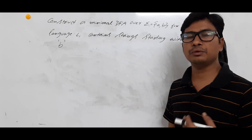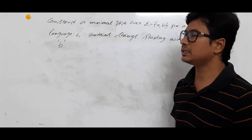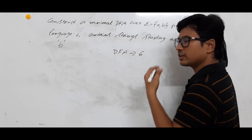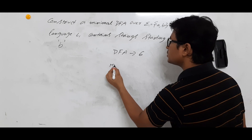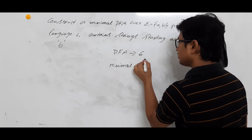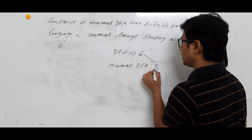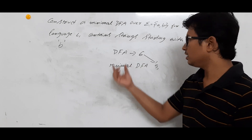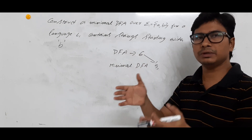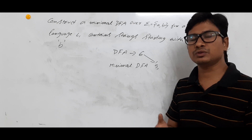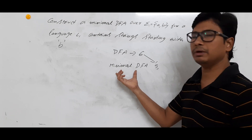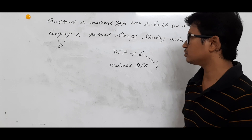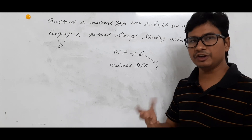So till now the three examples we discussed were all DFAs. Minimal DFA means you have a DFA with some number of states, and you reduce that number. If it originally has six states and you reduce it to five or four, then you have a reduced DFA. The advantage is memory: fewer states means less storage memory needed.